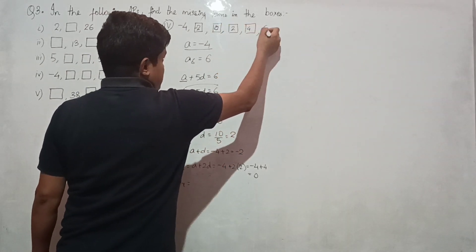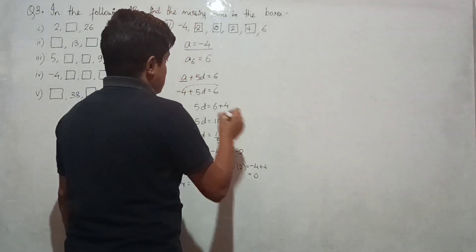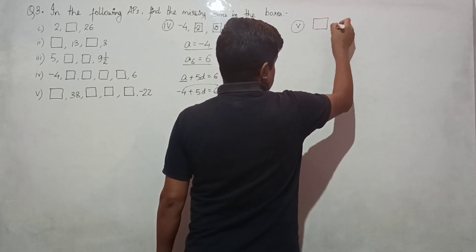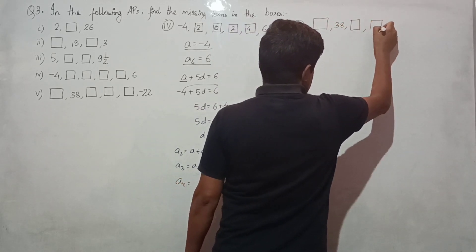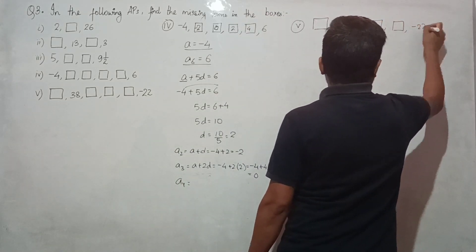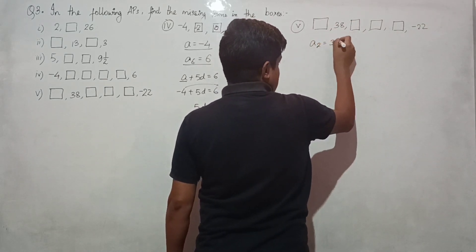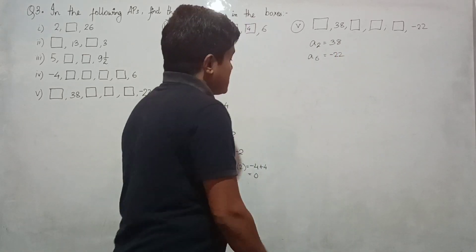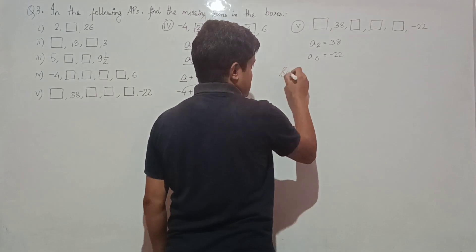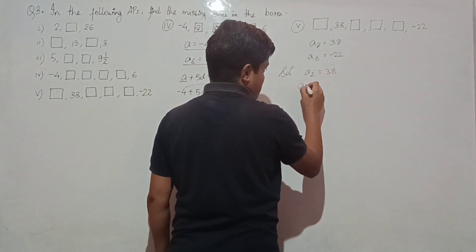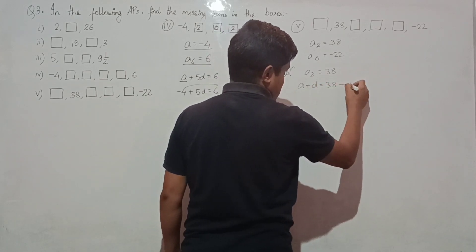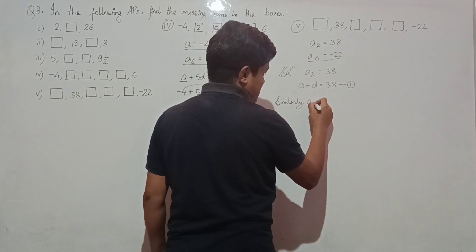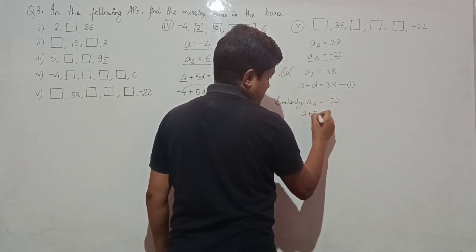The solving technique is: whenever a term is given, open the formula. Next problem: the sequence is 10, box, 38, boxes, minus 22. First term is 10, second term is 38, and sixth term is minus 22. So a2 equals 38: a plus d equals 38 — equation 1.